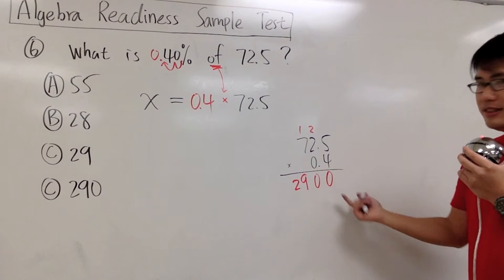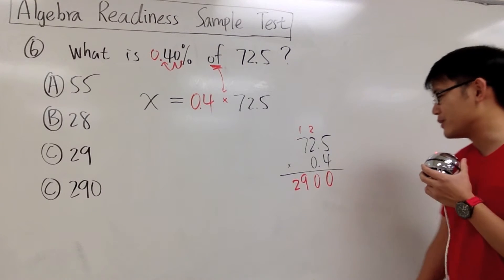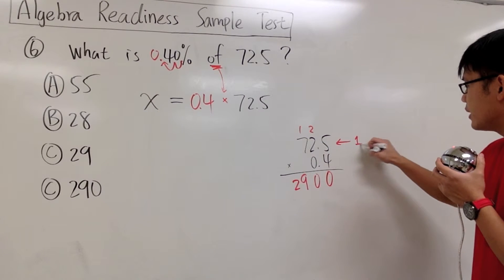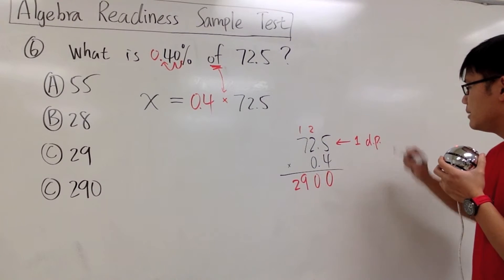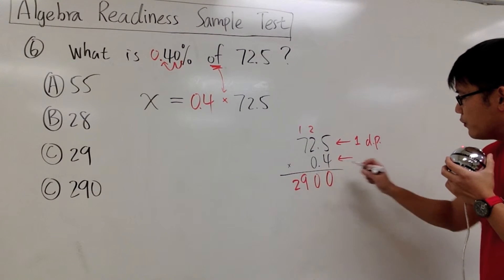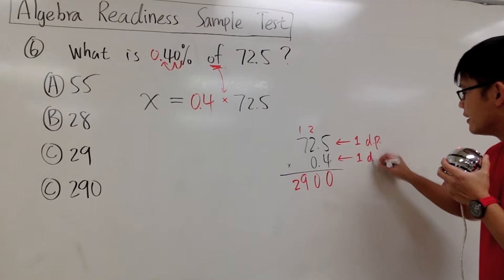So it seems we have 2900, but this is the trouble we have to worry about. Here we have one decimal place - let me indicate one decimal place (dp stands for decimal place). And here the 0.4 also has another decimal place.